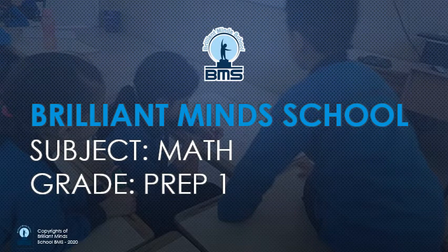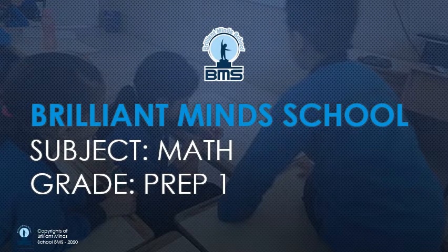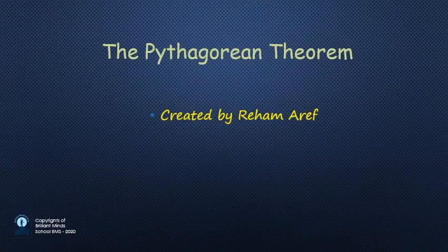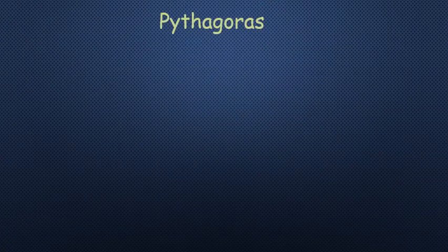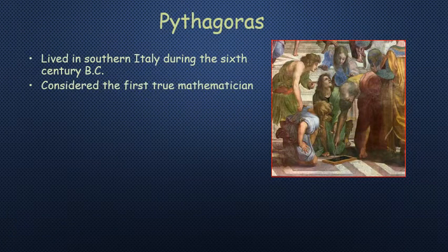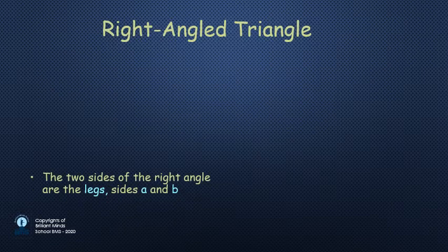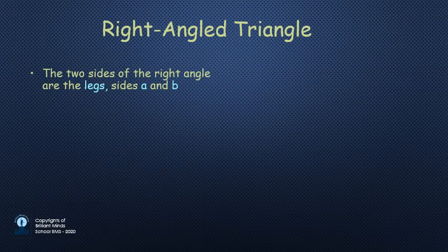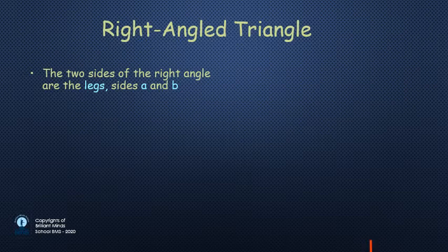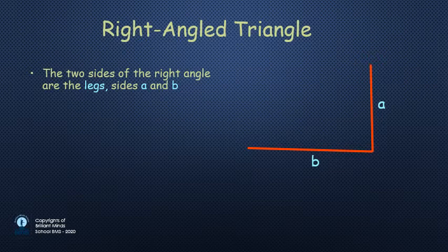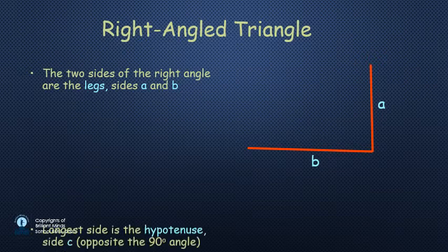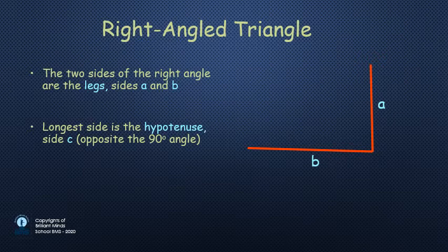Hello dear students, we will continue our curriculum insha'Allah for prep 1. Let's start with the Pythagorean Theorem. This theorem is for the right angled triangle. At first, let's know that the two sides of right angled triangle that forms the right angle or the 90 degree angle are called legs of the right angle, and the side that is opposite to the right angle, which is the greatest side of the right angled triangle, is called the hypotenuse.